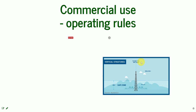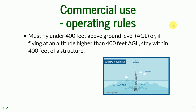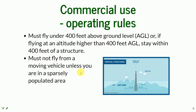The operating rules for the commercial uses of UAS require flying under 400 feet above ground level, or if flying at a higher altitude, staying 400 feet off a structure to avoid it. You cannot fly from a moving vehicle unless you are in a sparsely populated area. You must fly at or below 100 miles per hour.